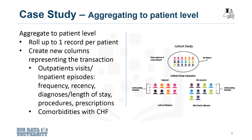Then, all the transactional records were aggregated to the patient level, yielding a single record for each patient as required for the decision tree classification method that would be used for modeling. As part of the aggregation process, many new columns were created representing the information in the transactions — for example, frequency and most recent visits to doctors, clinics, and hospitals with diagnoses, procedures, prescriptions, and so forth.